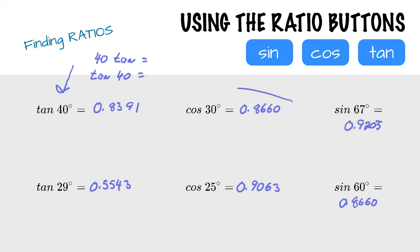And the last one is 0.8660. And again, you'll notice that cosine 30 and sine 60 are the same. And that's because 30 plus 60 is 90. They are opposites of each other.